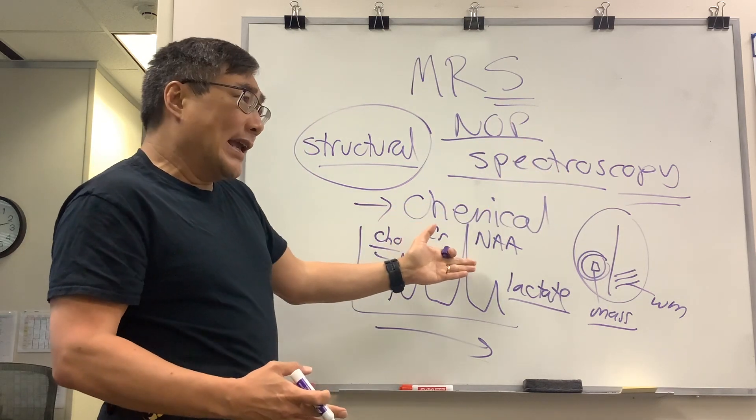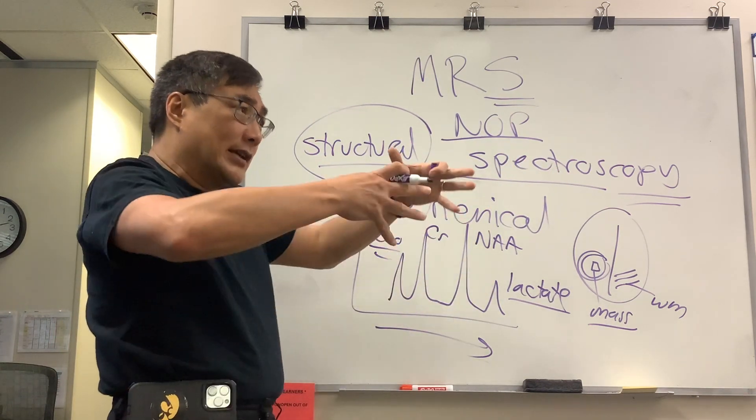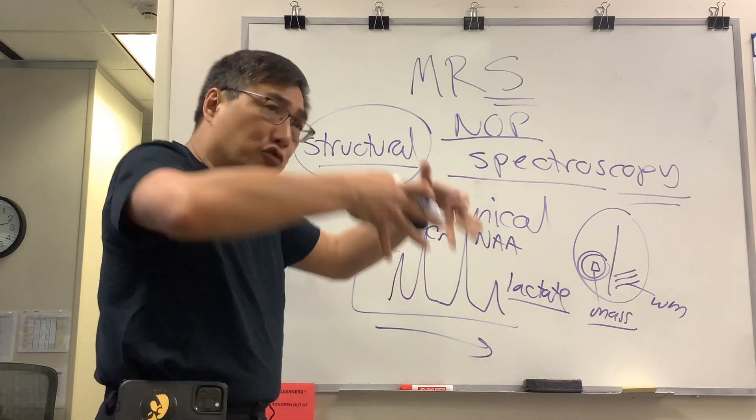If we're looking at NAA and it's decreased, that's the neuronal marker. So things that damage neurons will drop the NAA.